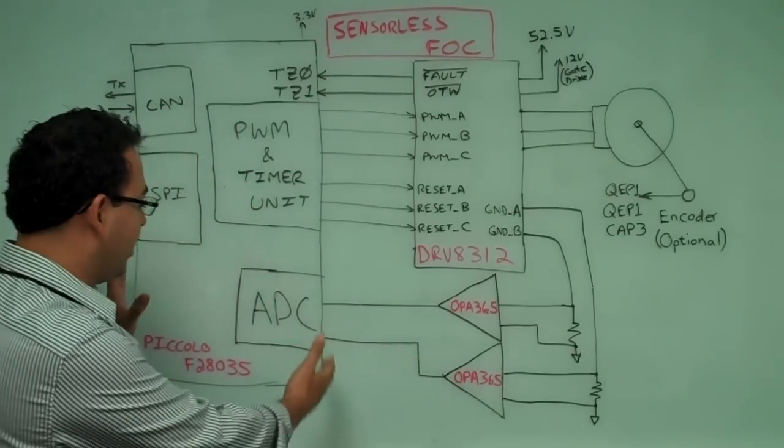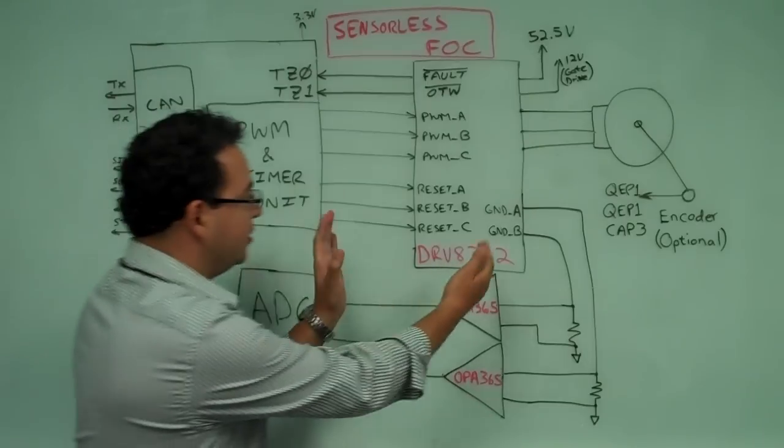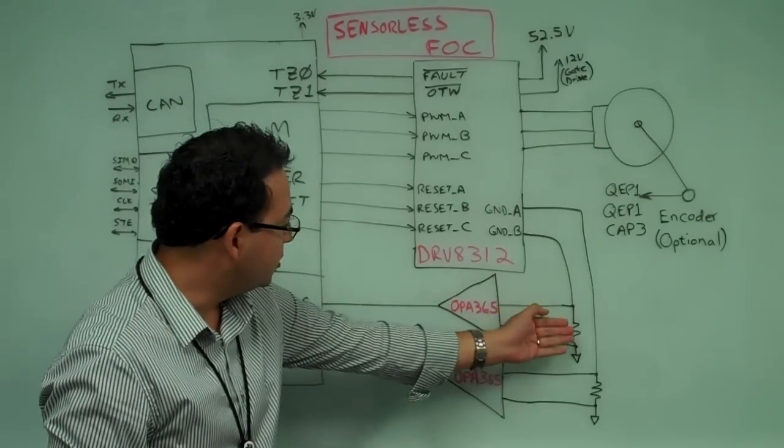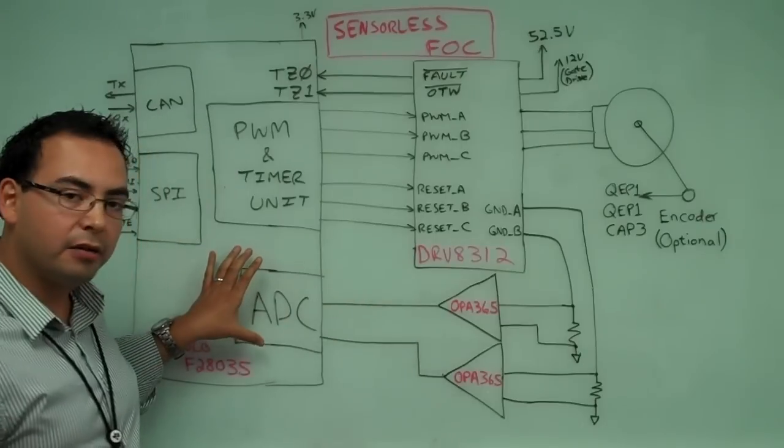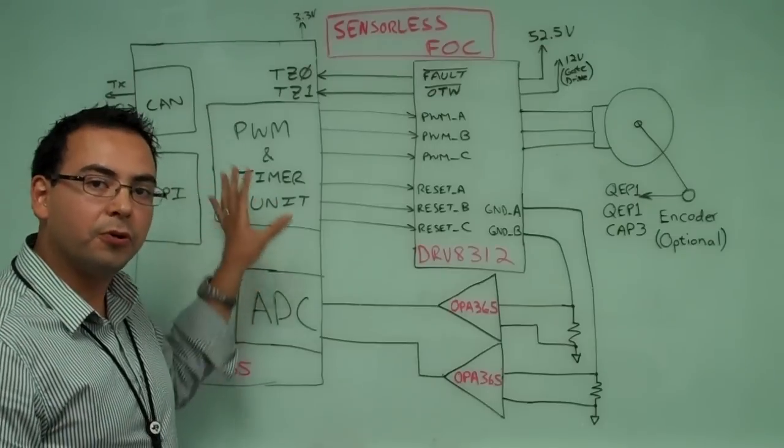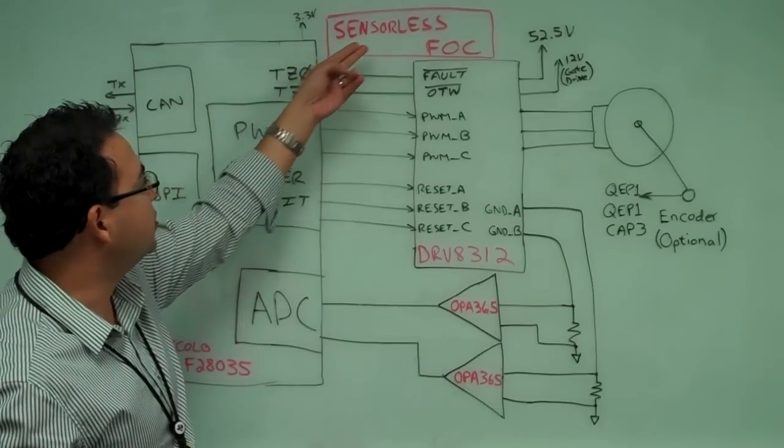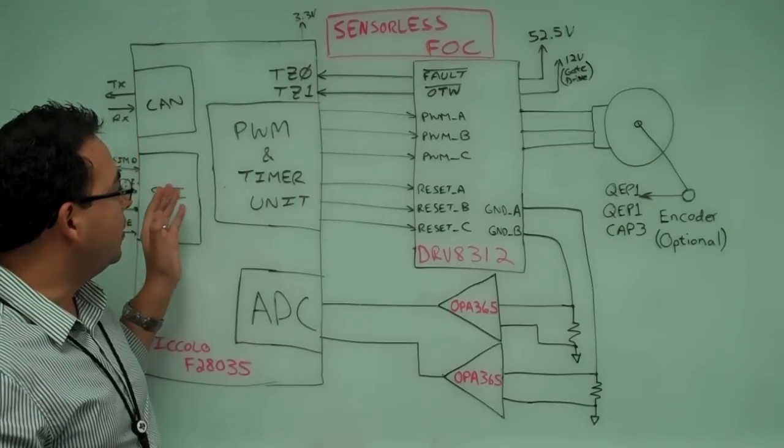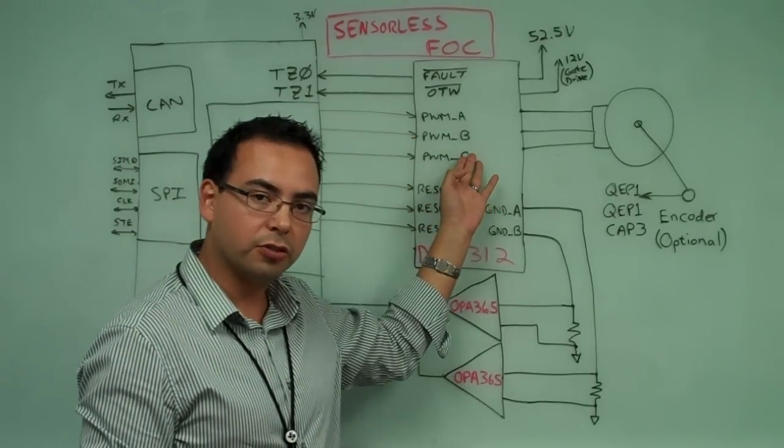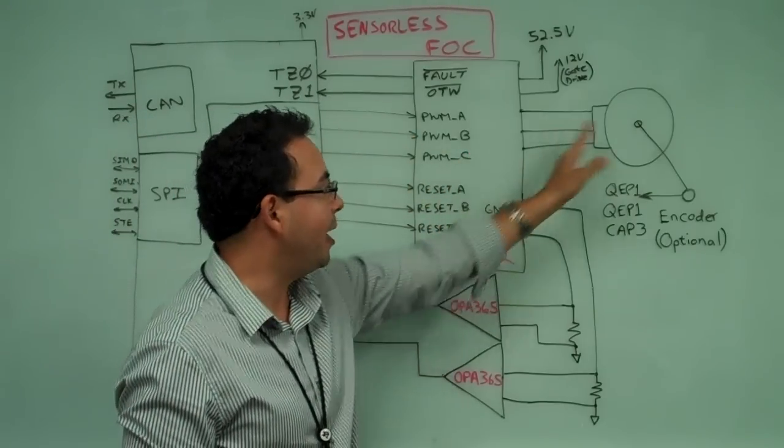So in this case, we have a Piccolo and we have a DRV chip. We get the current from the DRV chip back to the ADC converter. The Piccolo runs a few control loops and an estimator, since we have a sensorless control. And then we feed those signals back to PWMs and these signals are amplified by the DRV chip back to the motor.